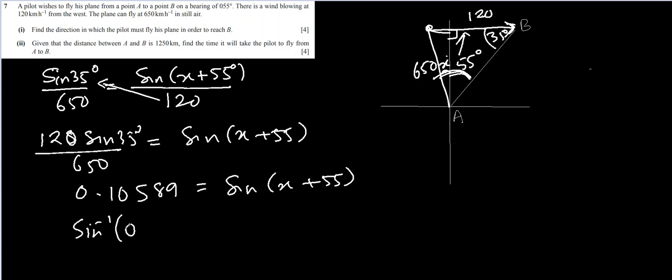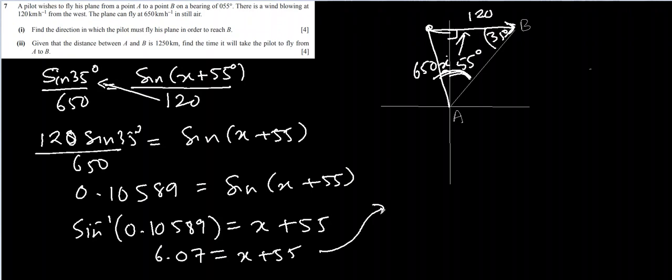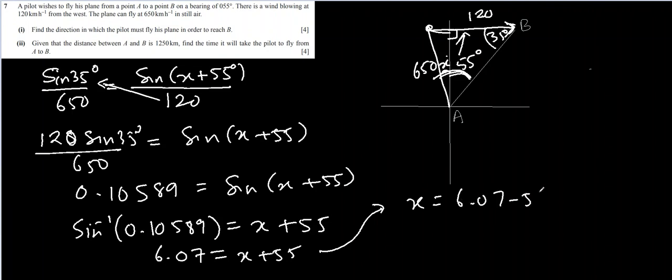That gives us 0.10589 equal to sine x plus 55 degrees. So sine inverse of 0.10589 equal to x plus 55. Now let's see how much it gives. It gives us 6.07. 6.07 equal to x plus 55. This will give us negative number which is x equal to 6.07 minus 55.